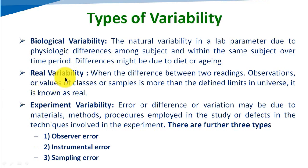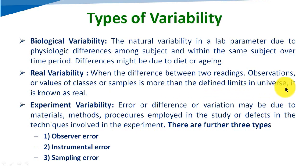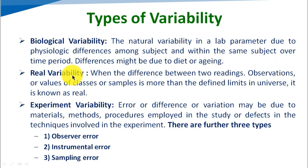Second is real variability. When the difference between two readings, observations, or values of classes or sample is more than the defined limit in the universe, it is known as real variability — meaning a real difference between the data. For example, if we are going for a weight variation study and the result differs from the IP prescribed limit, such variability is known as real variability.